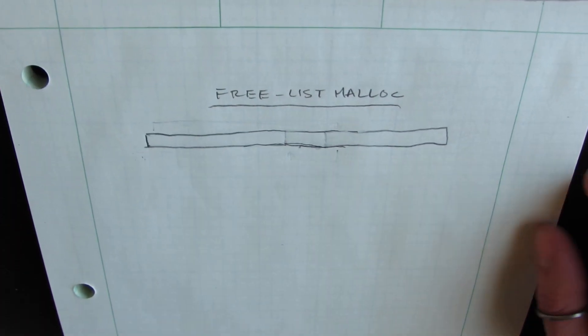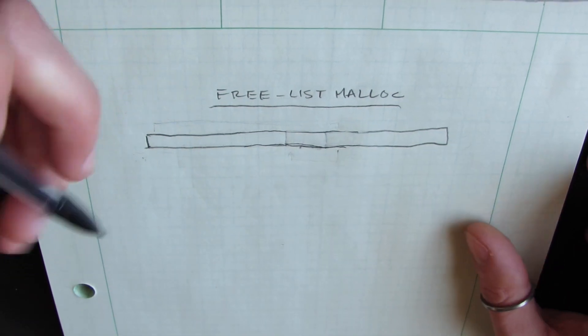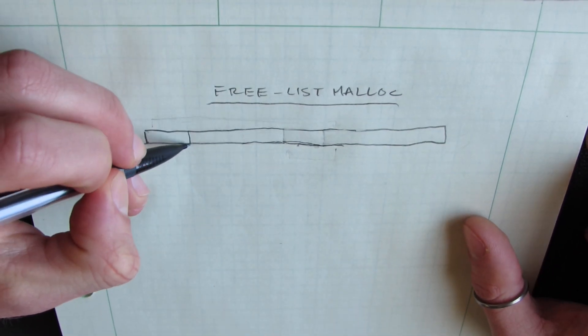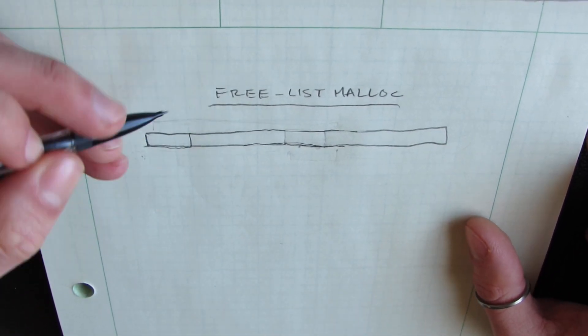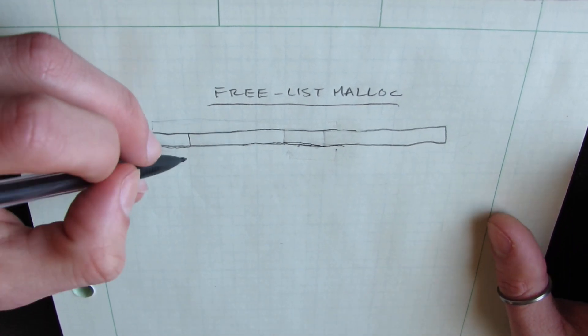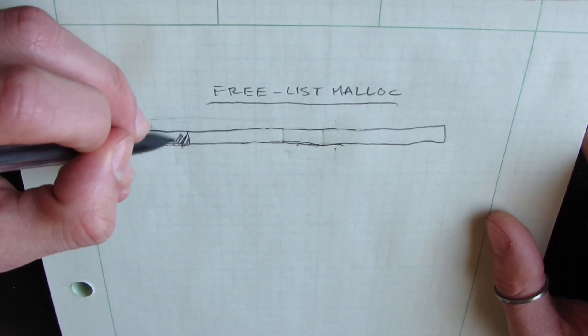So our linked list struct, which is much smaller than the large block, would only take up about this much. You can kind of think of this as like a header. And let's draw this header in here.